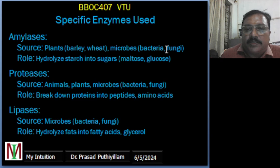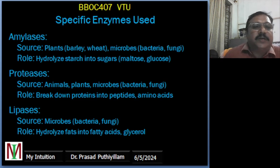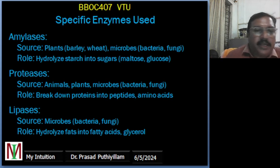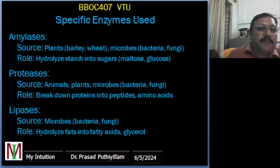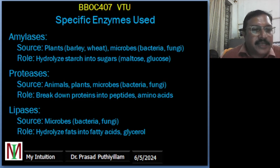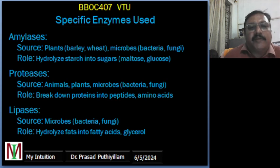Moving to the specific enzymes which are used: the first example is amylase. The main source of amylase is derived from wheat or barley, or it can be made from microbial sources like bacteria or fungi. The main role of amylase is hydrolysis — it hydrolyzes starch molecules into smaller sugars like maltose or glucose during starch processing, baking, brewing, and even alcohol production.